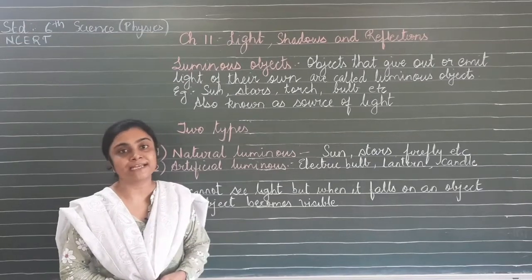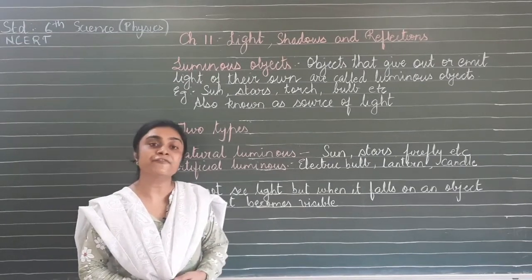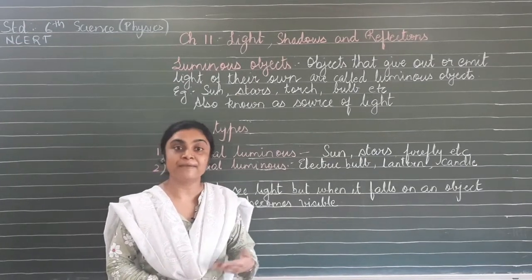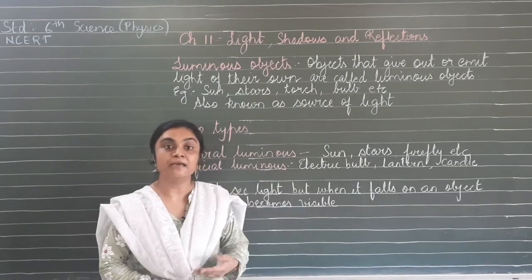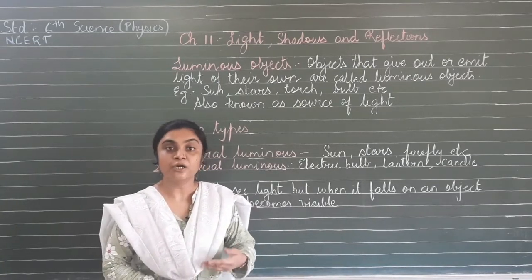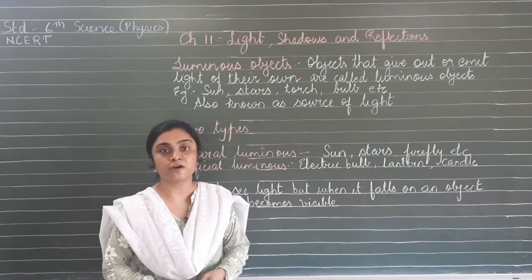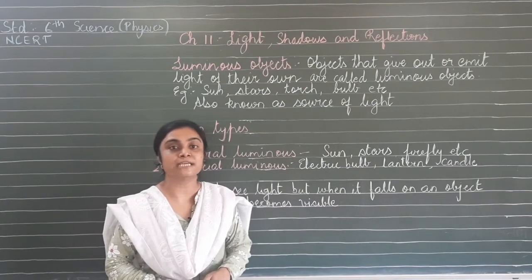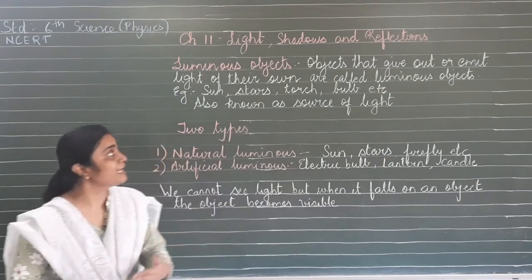We know the main source of light is the sun. There are other different sources also - for example, stars, candle, lantern, bulb, torch. These are all sources of light. Without light, we cannot see any objects.